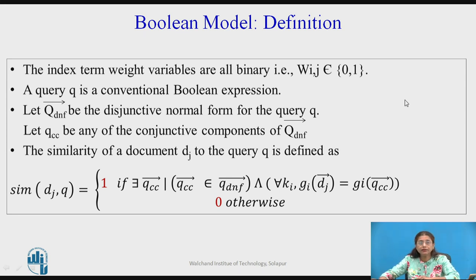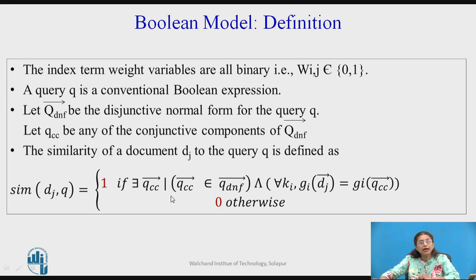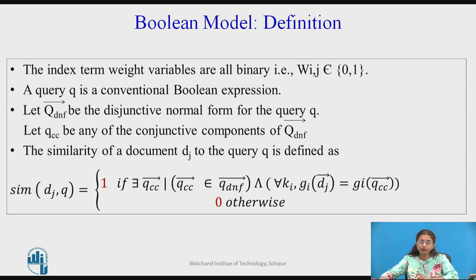The result of the similarity will again be binary — that is, 1 or 0. We take any of the conjunctive components (qCC), and for all the keywords in that conjunctive component, if the weight in the document and the component is the same for all terms, then the similarity will be 1; otherwise it will be 0. This is the degree of similarity or ranking of the document.